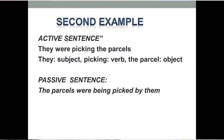Second example. Active sentence: 'They were picking the parcels.' They हमारे पास subject है, picking यहाँ verb है, the parcels हमारे पास object है। अब यह active sentence passive में change होगा तो वो बन जाएगा: 'The parcels were being picked by them.'